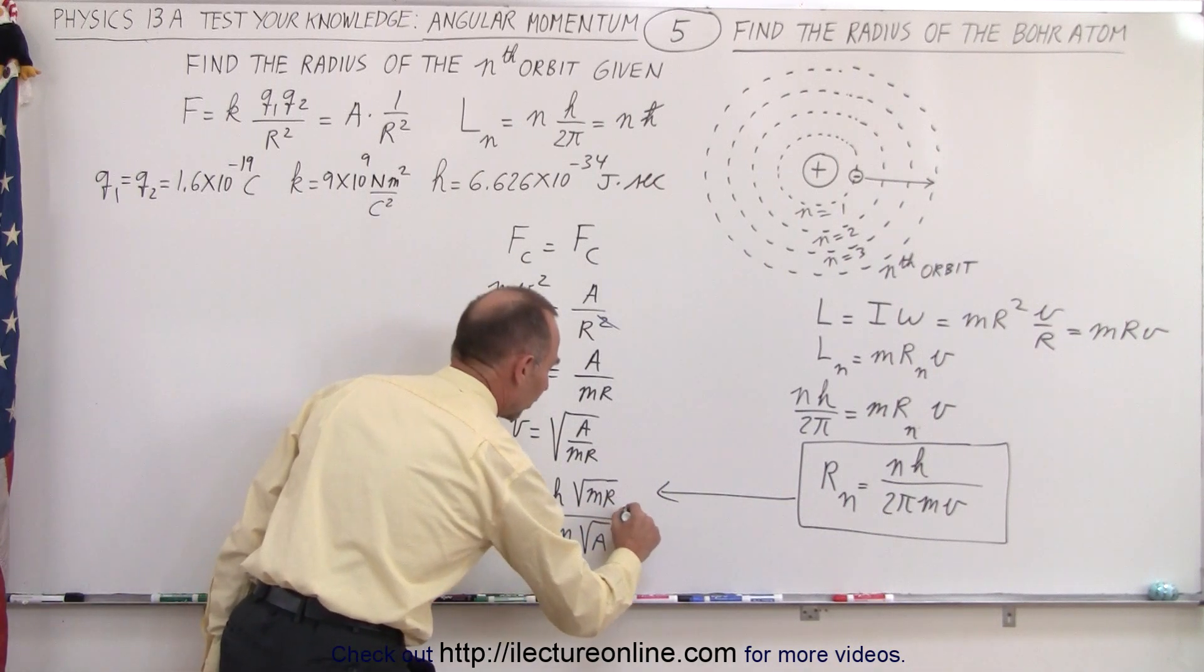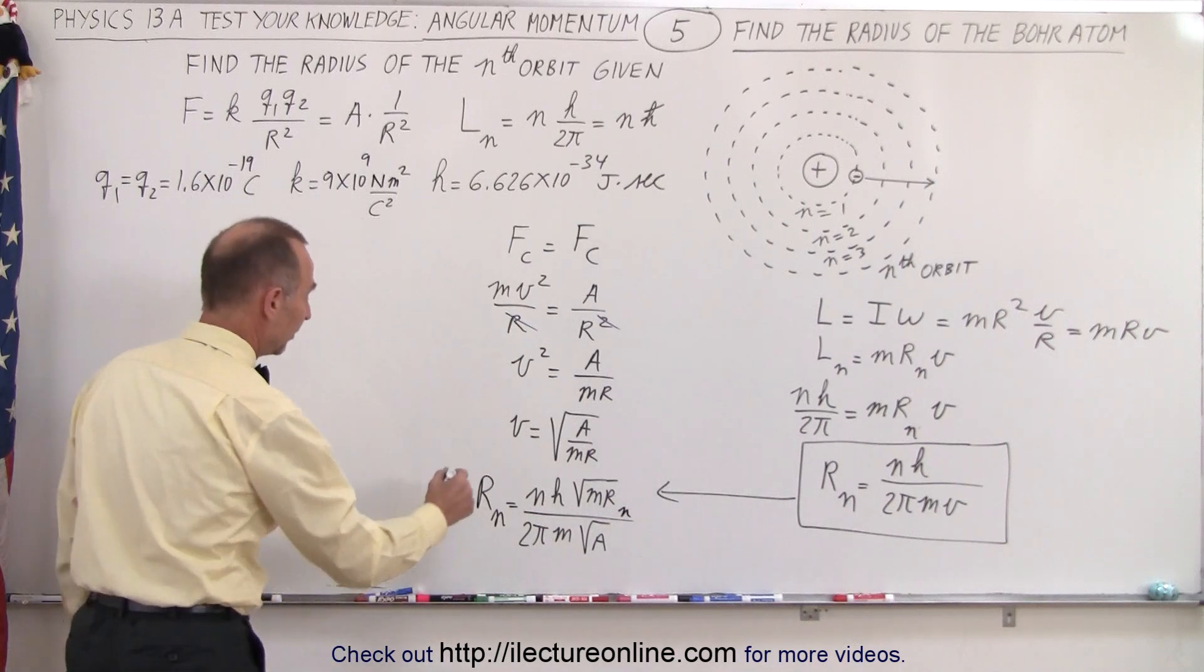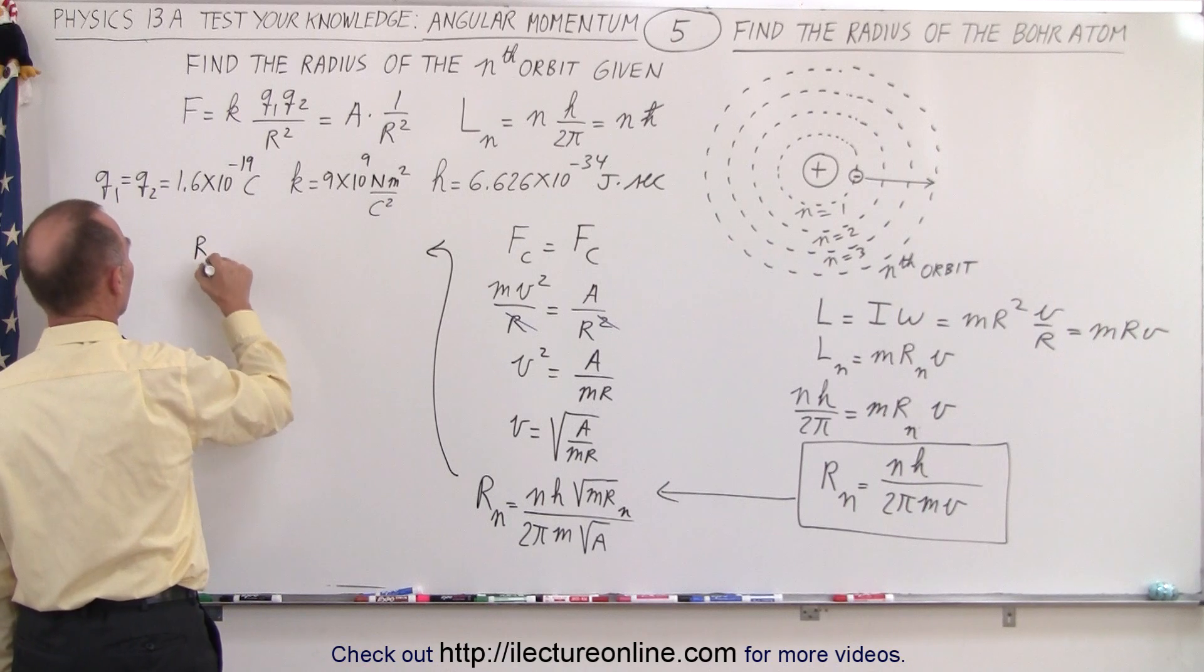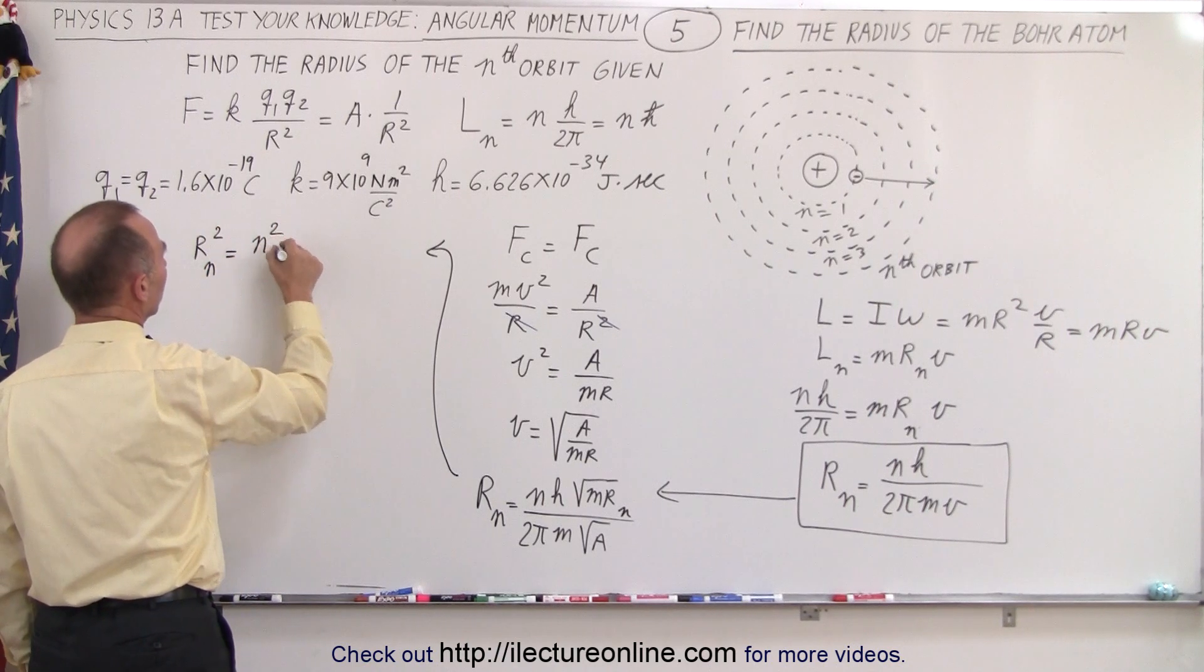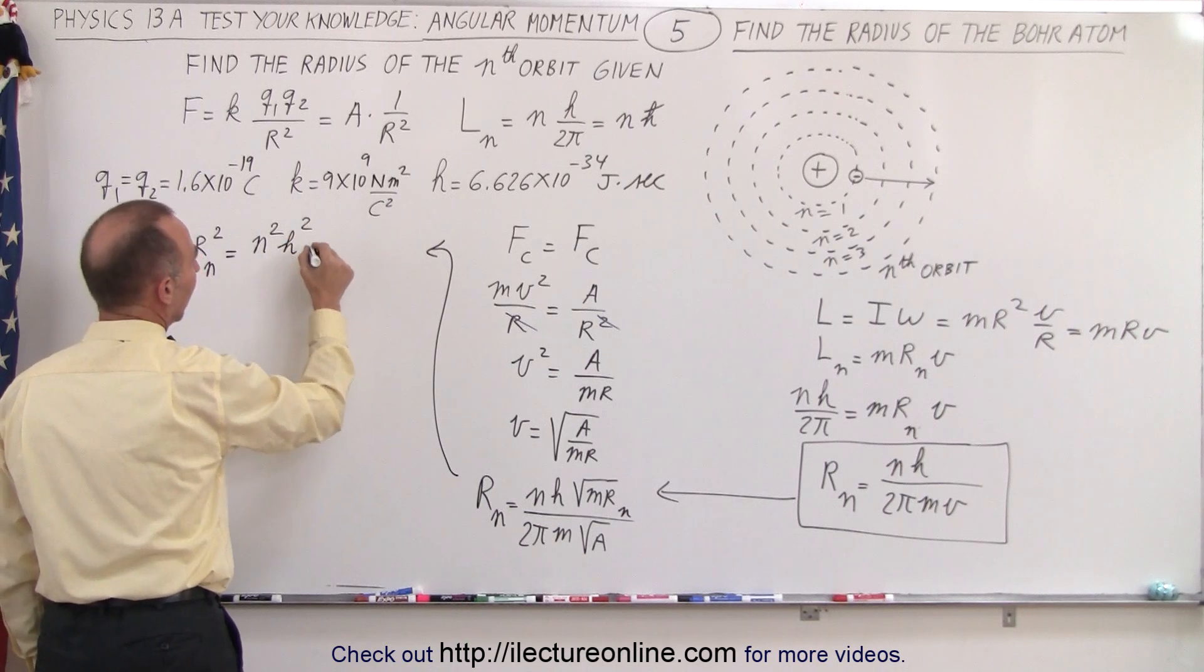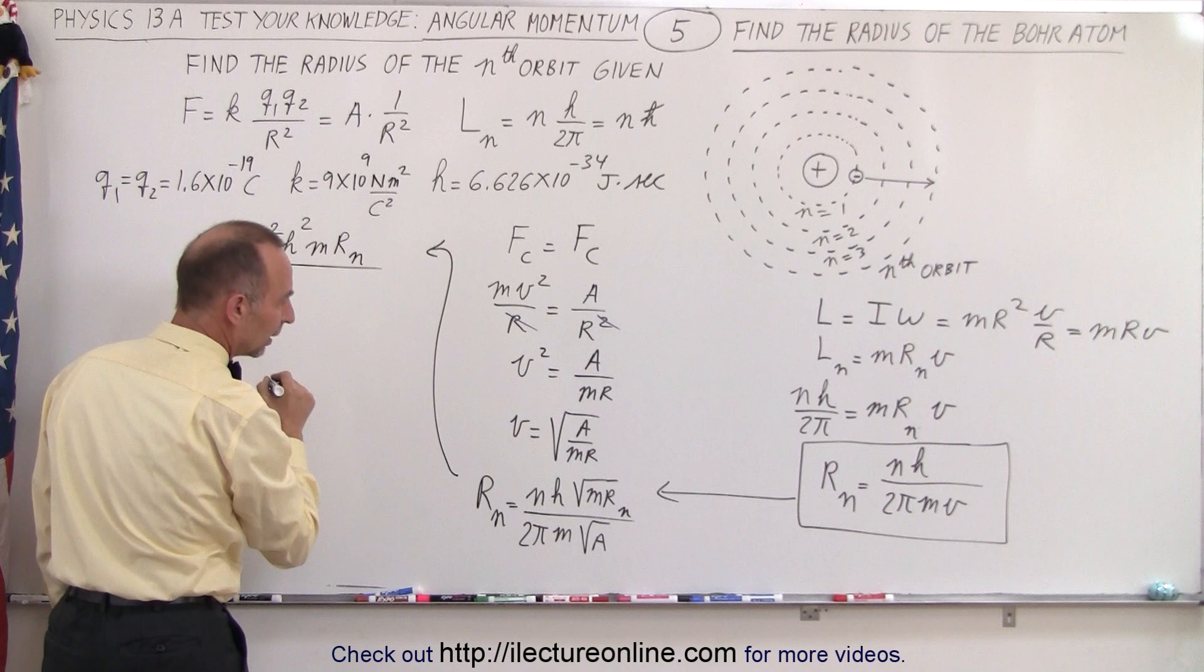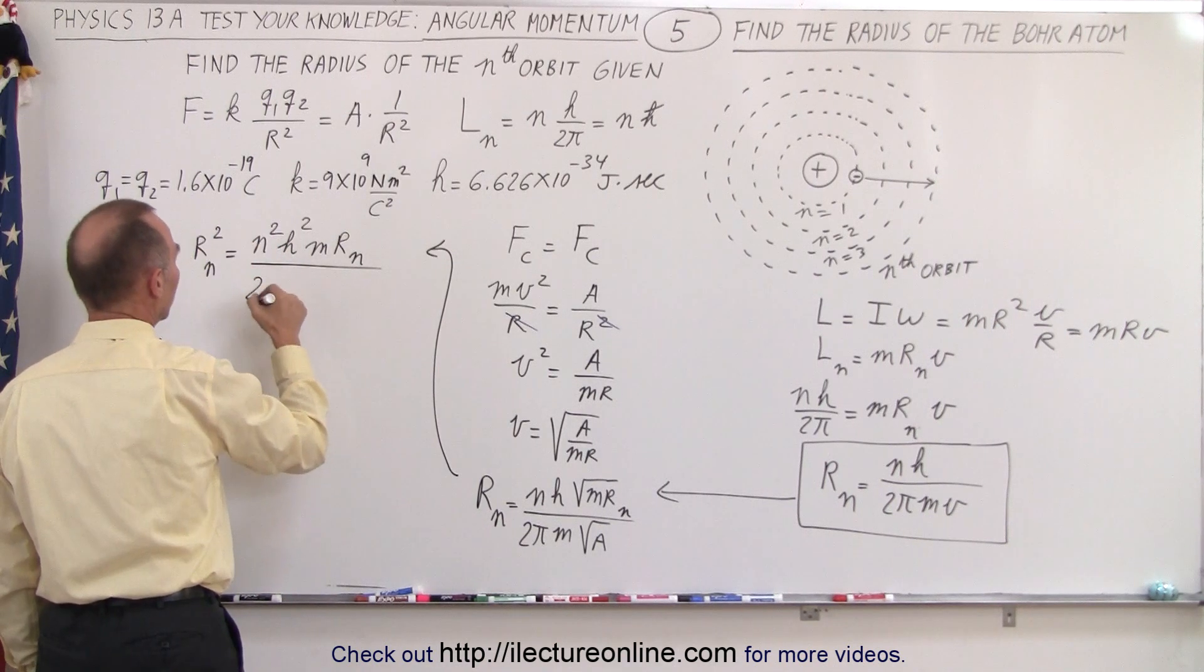But notice that this is also r sub n, and I have an r sub n on both sides, so I need to square both sides. If I then square both sides, on the right side, I have r sub n squared is equal to n squared h squared times m times r sub n divided by 2 squared, that would be 4.